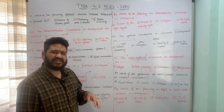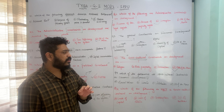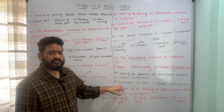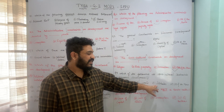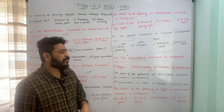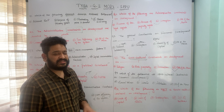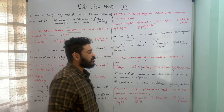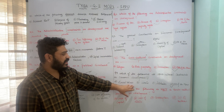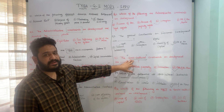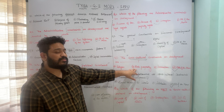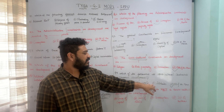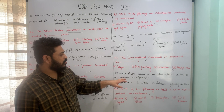A similar question asks: which of the following are socio-cultural constraints on economic development? The options are: A) social values, B) ideals, C) attitudes, and D) all of the above. Social values, ideals, and attitudes all represent socio-cultural constraints, so option D is correct. In total, the socio-cultural constraints covered are: religion, propensity to save, innovation, social values, ideals, and attitudes.